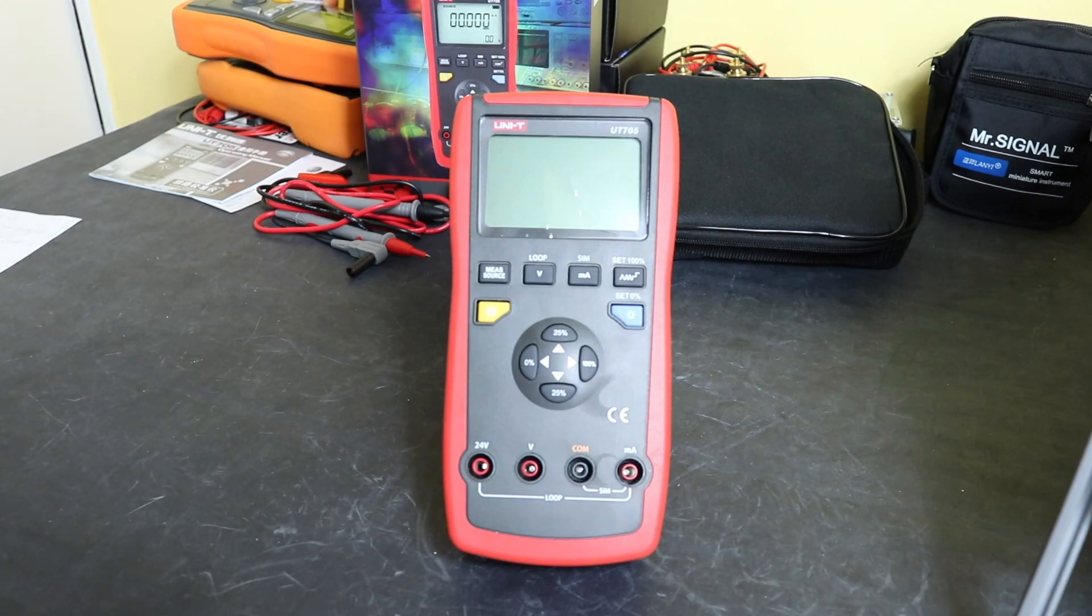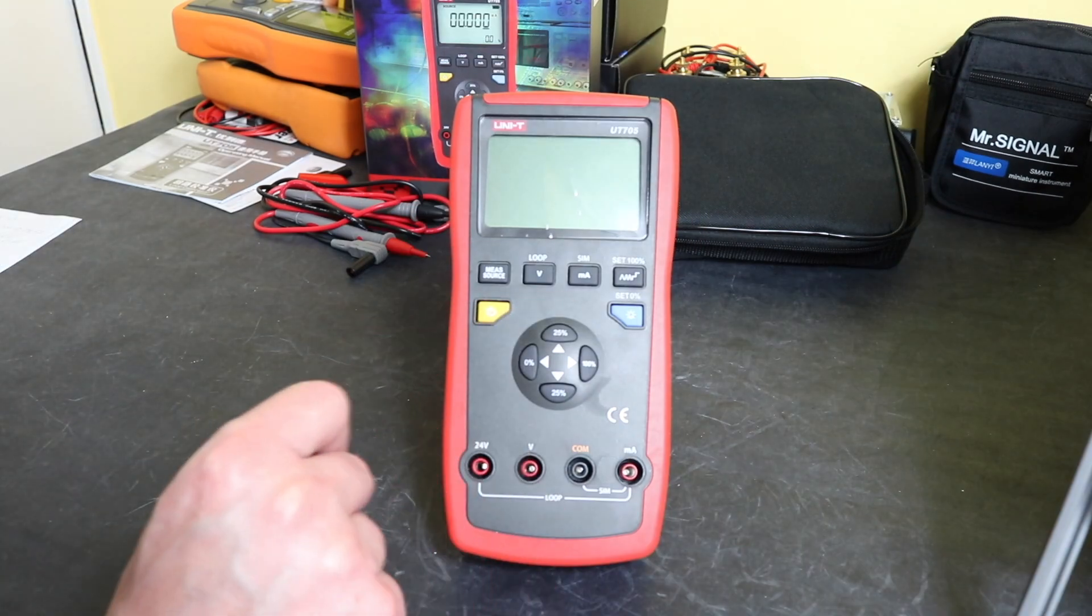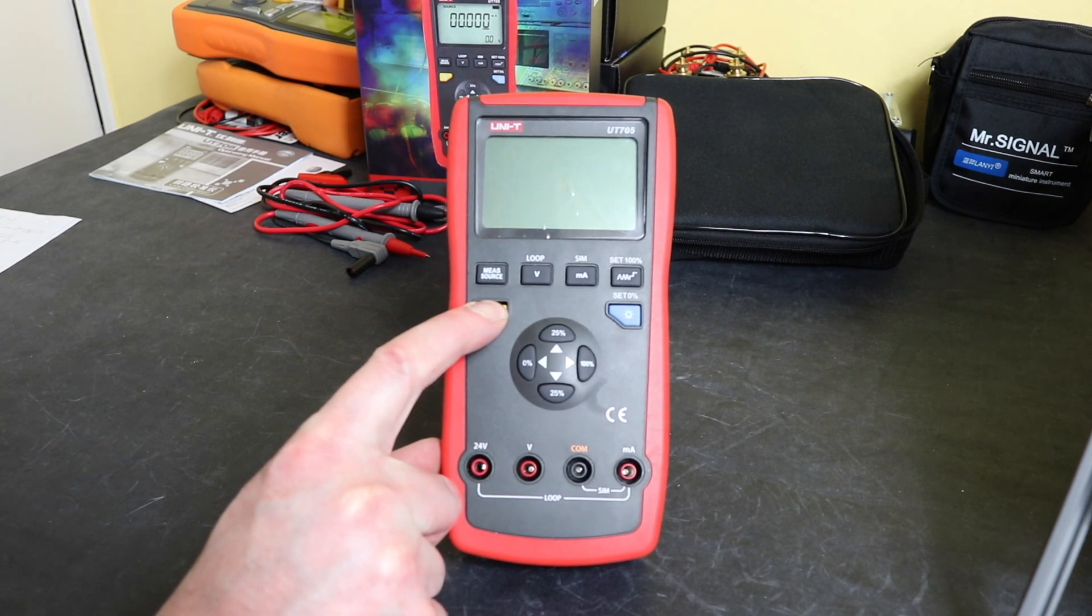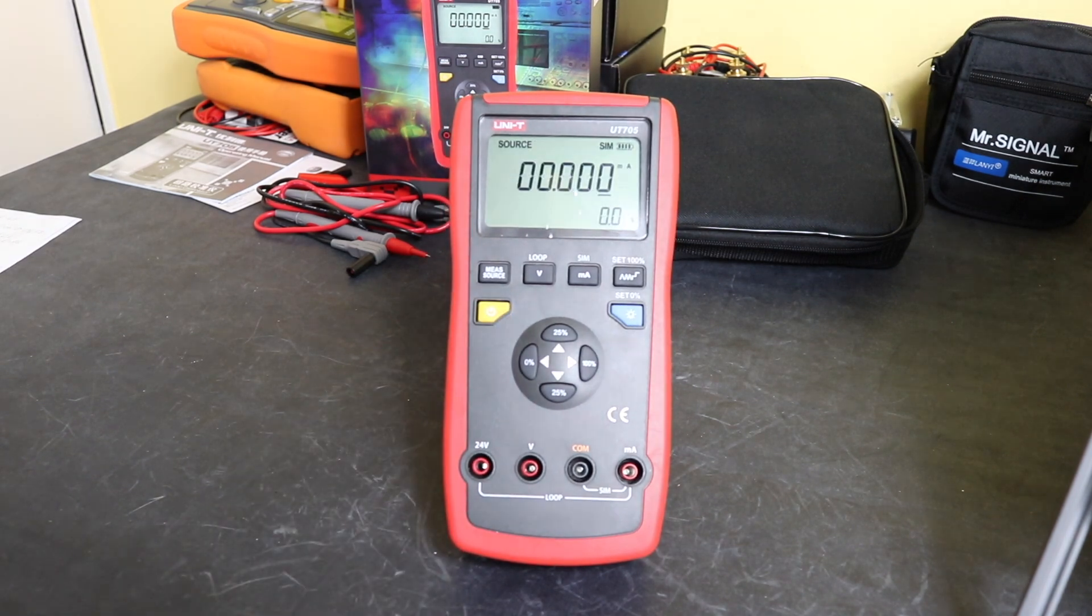We'll take a look at the instrument itself. We have an on-off button on this side here. Now this unit will source and measure current from 0 to 24 milliamps in 1 microamp resolution, and it will measure 0 to 31 volts in millivolt resolution. But it will not source voltage. So unlike all the other process calibrators that I've purchased up till now, all of them have the capability to source and measure both current and voltage, so this is lacking a little bit in that department.